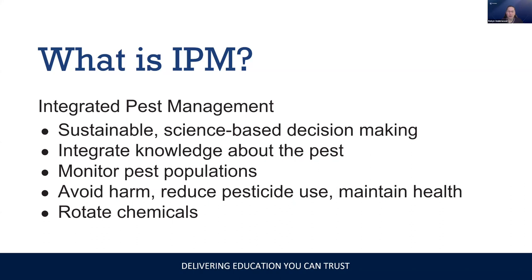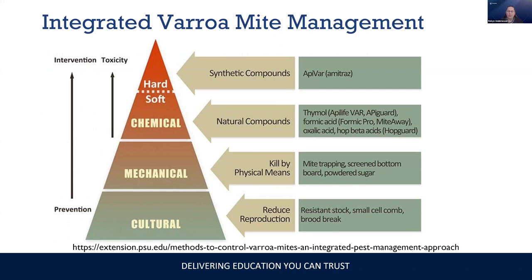I'm going to show you today how to monitor our pest population, which is the varroa mites. We try to avoid harm by not letting mite populations get too high, we want to reduce pesticide use, and our overall goal is maintaining the health of the colonies. We first try to avoid pesticide use, and when we do use pesticides, we don't continuously use the same one — we rotate through several. This is part of a fact sheet published on the Penn State Extension website entitled Methods to Control Varroa Mites: an Integrated Pest Management Approach.